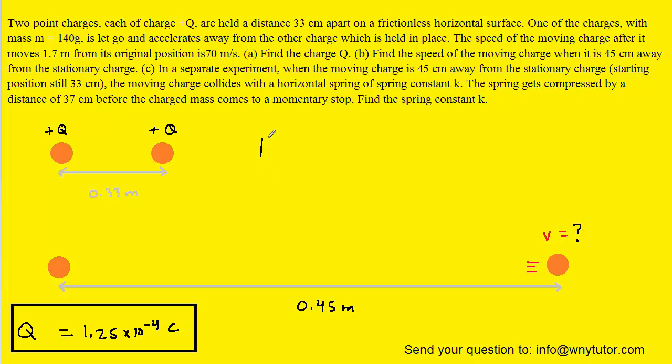The initial electrical potential energy can be set equal to the final electrical potential energy plus the final kinetic energy of that moving particle, which is one-half times its mass times its speed squared. This time we don't know the speed, but we do know Q. We found that earlier in part A.